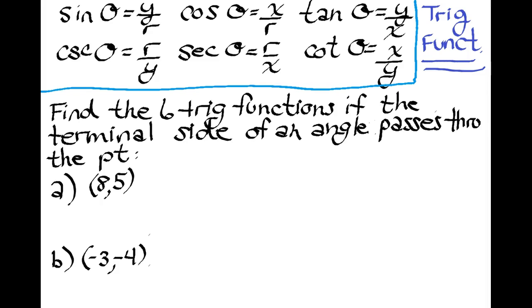It says, find the six trig functions if the terminal side of an angle passes through the point, and for the first example, 8,5.